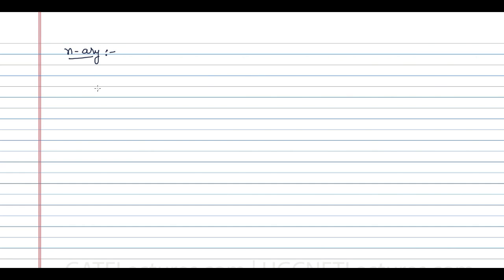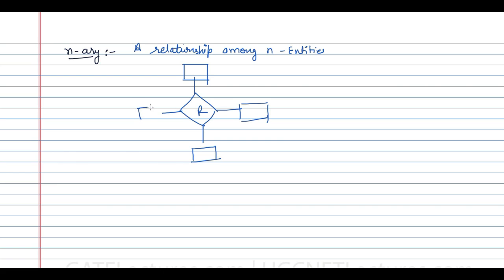Next is the n-ary relationship — these are relationships among n entities. We can have entity e1, e2, e3, e4, e5, e6, and so on. If there are n entities participating in a certain relationship, then that is called an n-ary relationship.